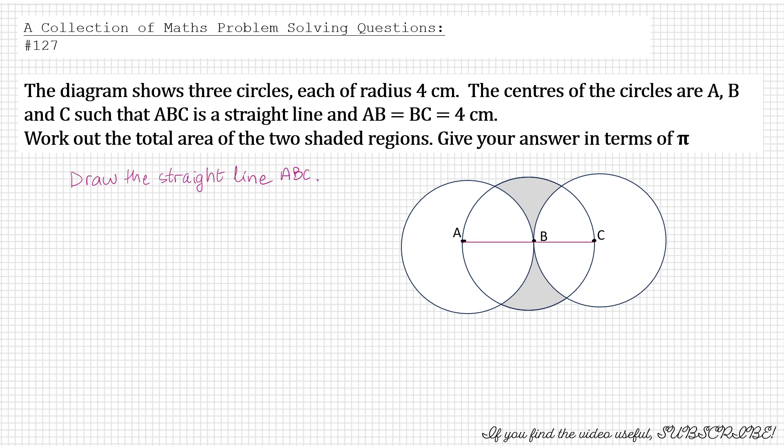So it starts with first to draw the line ABC. It passes through the centers of the three circles and AB equals BC. They are both the radius of the circle. The next step is mark the other points of intersection, that is D and E.